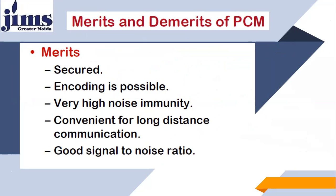To understand noise immunity: as long as your receiver is able to identify 1s and 0s correctly, no matter how damaged those pulses are, your information is conveyed correctly. Even if the signal is corrupted, if your receiver is able to distinguish 1 and 0, it's okay. PCM is also convenient for long-distance communication — if you place regenerators at certain distances in the channel, it works well. It also provides a good signal-to-noise ratio.